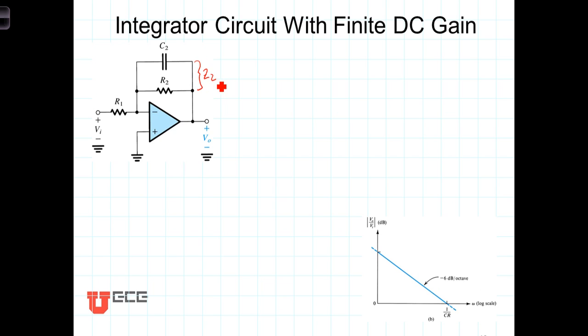First of all, Z2 is going to be the parallel impedance of those two devices. We'll note that the impedance of the capacitor is 1 over C2S, and of course the impedance of the resistor is just R2.